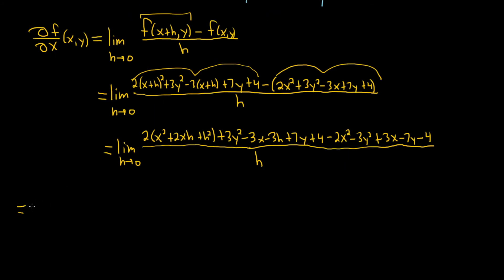So I'm going to come over here to give ourselves some more room. Limit as h approaches 0. Let's go ahead and distribute this 2. So it'll be 2x squared plus 4xh, because 2 times 2 is 4. And then plus 2h squared again. So 2h squared.